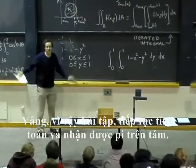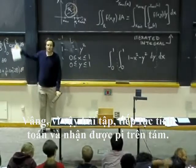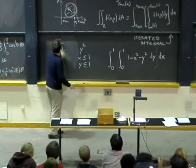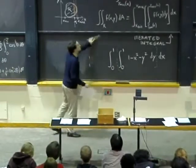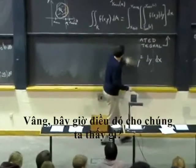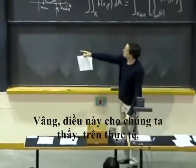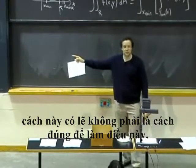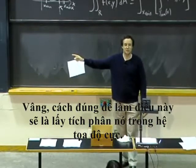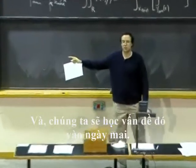OK, so exercise, continue calculating and get pi over eight. OK, now what does this show us? Well, this shows us, actually, that this is probably not the right way to do this. OK, the right way to do this will be to integrate it in polar coordinates. And that's what we'll learn how to do tomorrow.